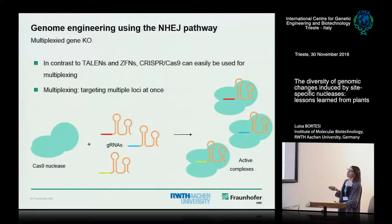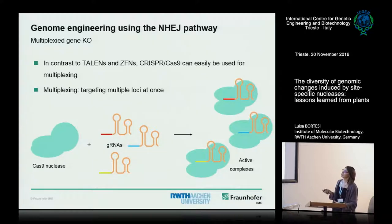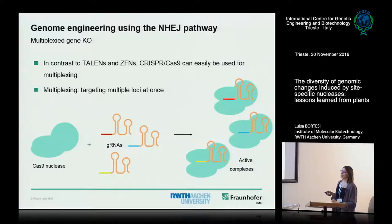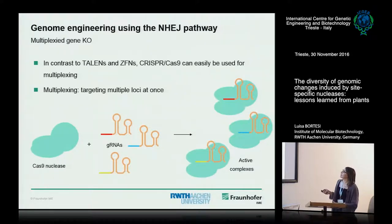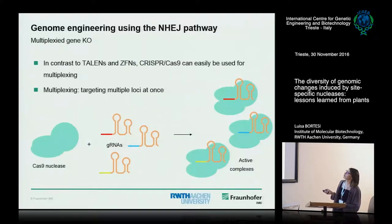This slide shows how multiplexing works — one of the strengths of the technology. You just need one Cas9 nuclease, which is always the same, and then several guide RNAs targeting different genes. You can put them all together at once and address several genes at the same time. This is a very useful feature for breeding and improving traits.